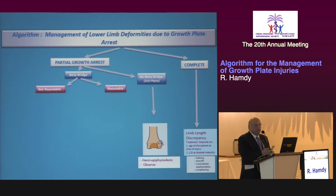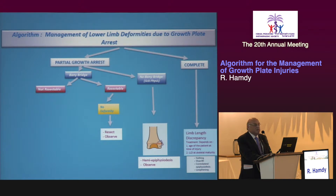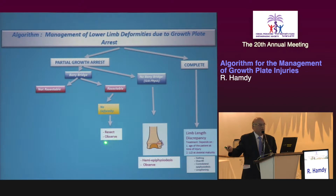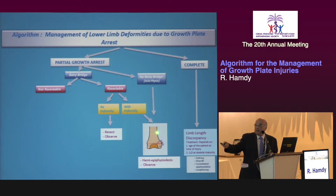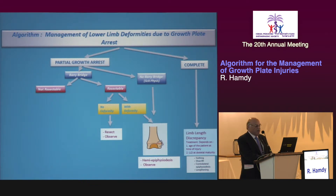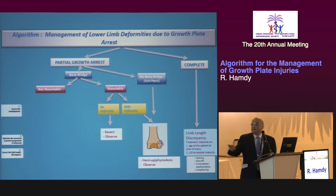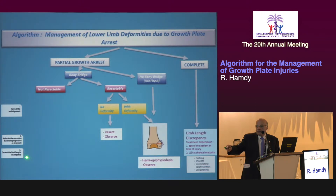If there is a bony bridge, the next question is whether it is resectable or non-resectable, and whether there is an associated deformity. If there is no deformity and it is resectable, you resect and observe — nothing more needs to be done. If there is a deformity and it is resectable, you perform a hemi-epiphysiodesis and observe. If the bony bar is not resectable, these three issues become critical: correct the alignment, maintain the correction, and address the LLD.